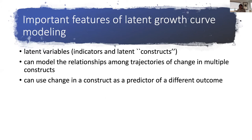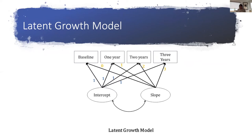Latent growth curve modeling really allows you to expand the set of longitudinal questions you can ask. The main feature is the concept of latent variables: there are indicators—things you measure—and latent constructs estimated from those indicators. For example, in factor analysis, a factor is a latent construct estimated from individual assessments that make up that factor. You can model the relationship among trajectories of change in multiple constructs—slopes in one measure and another—and use change as the predictor of a different outcome.